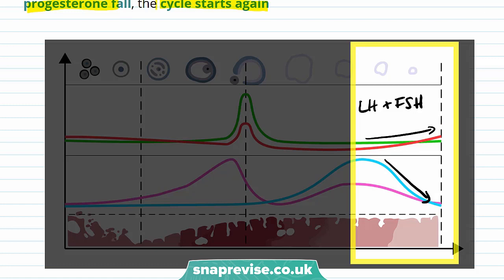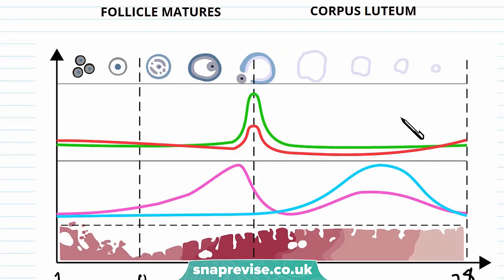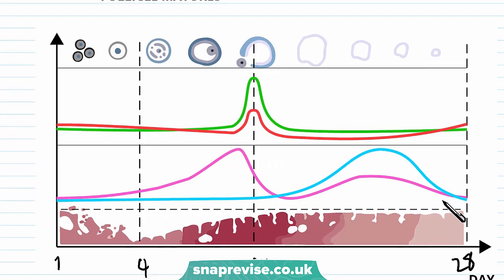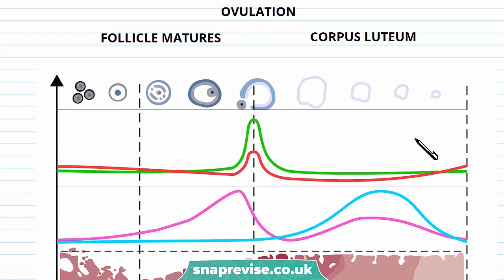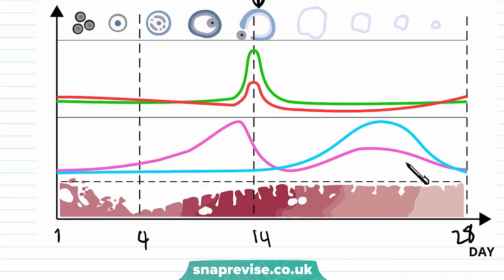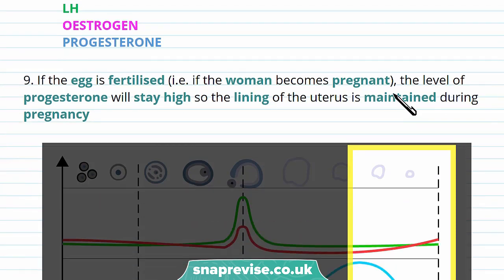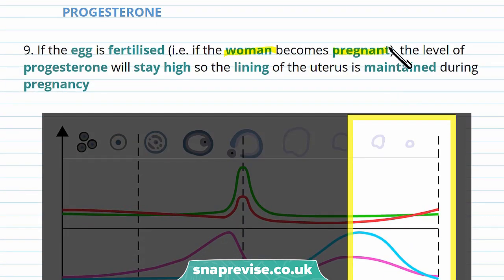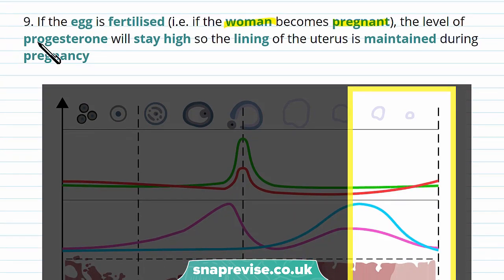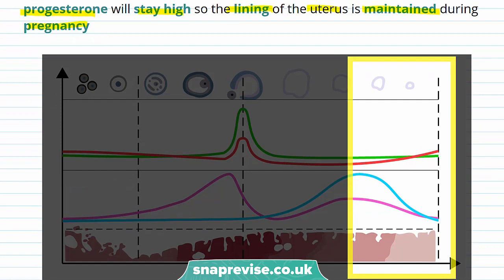Now let's look at the summary. This graph shows the levels of hormones over the 28 days of the cycle, and remember that at day 14, ovulation occurs. If the egg is fertilised and the woman becomes pregnant, the levels of progesterone will stay high and won't drop. This means the lining of the uterus is maintained during pregnancy.